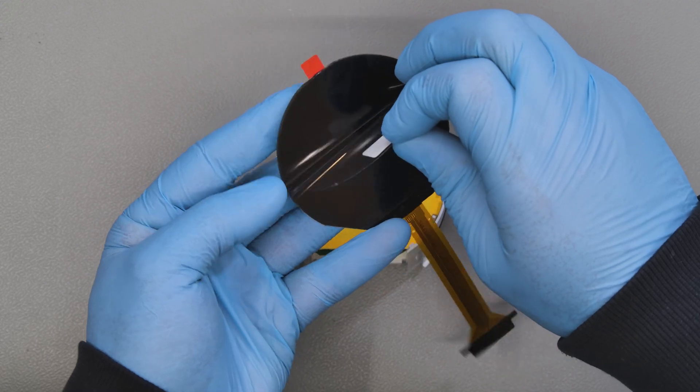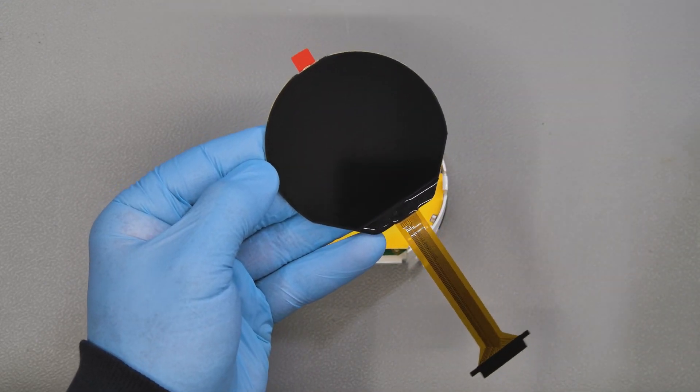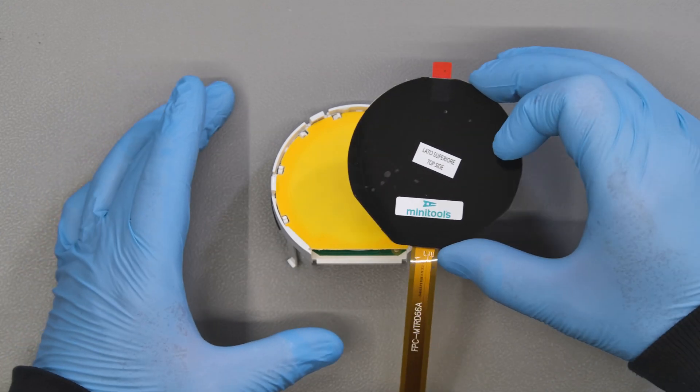Take off the back protective film from the Minitool's display and position it, securing it on its base.